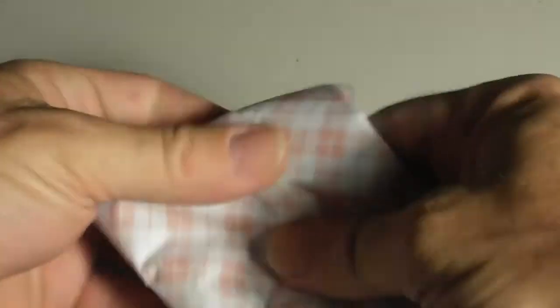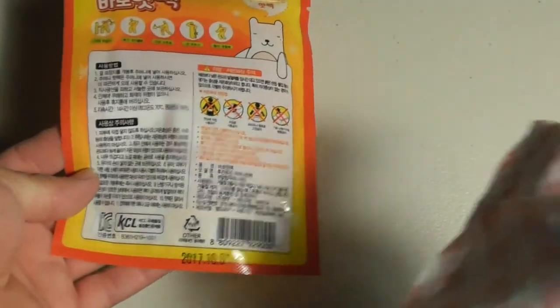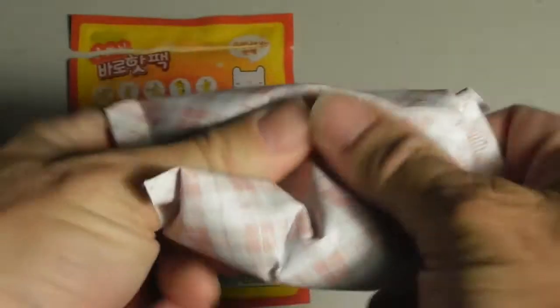this is a chemically activated type heat warmer. So, you want to shake it around, move it around, get the chemicals inside the container. Ooh, I'm starting to feel some warmth now. The instructions are in Japanese, so that is not going to help you if you're in the U.S. But, this is how you activate these hand warmers. Move it around a little bit.